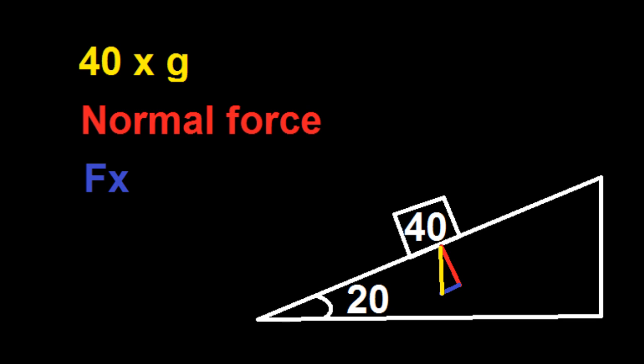Then you make a triangle within a triangle. Make the hypotenuse straight up and down and this is the mass times gravity, marked in yellow. Then we have the normal force marked in red which is perpendicular to the hypotenuse of the big triangle. Then we have the FX which is the blue line connecting the hypotenuse and normal force.